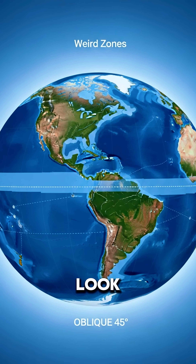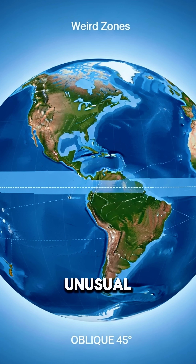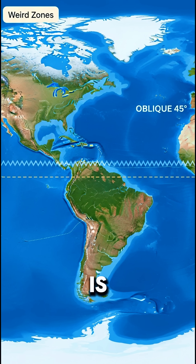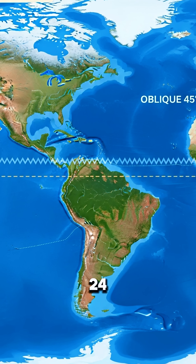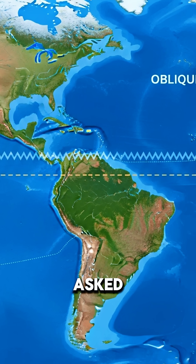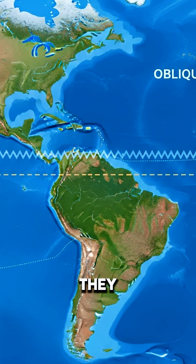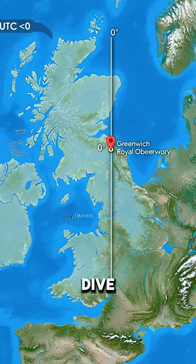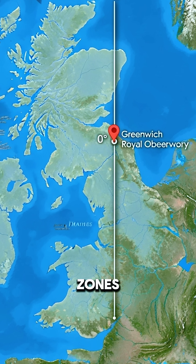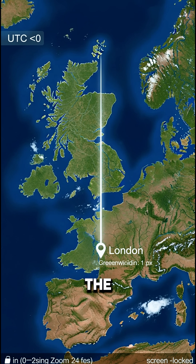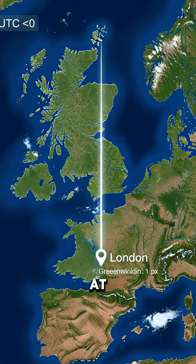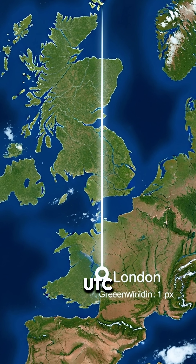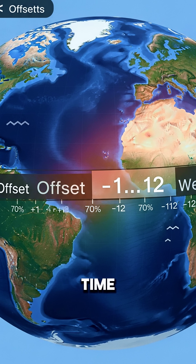Why do time zones look so unusual? You likely know that the Earth is split into 24 time zones, but have you ever asked why they appear so strange? Dive into the captivating world of time zones beginning at the prime meridian at Greenwich, 0 UTC, Coordinated Universal Time.